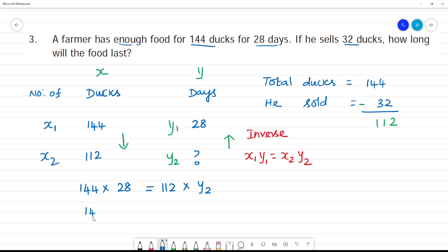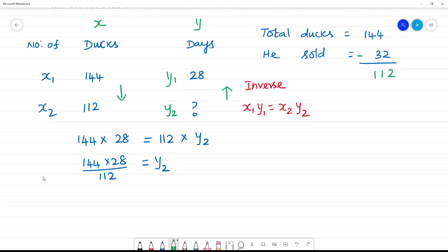Now, 144 multiplied by 28 divided by 112 equals y2. When we have multiplication and division, we cancel numbers. Cancel by 2... 2s are 10, remainder 1, gives 56.